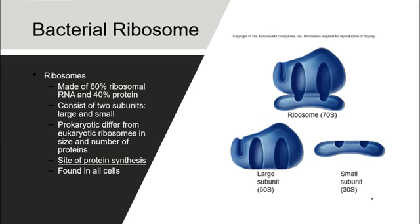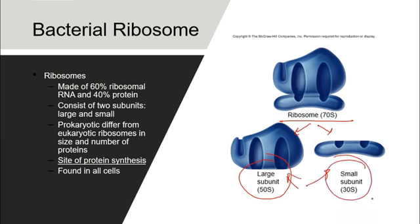Bacterial ribosomes are a little different in structure and function compared to eukaryotic ribosomes. While eukaryotic ribosomes are known as 80S ribosomes, prokaryotic ribosomes are known as 70S, composed of two components: the large 50S subunit and the smaller 30S subunit. These ribosomes are involved in protein synthesis, and bacteria continually perform protein synthesis inside the cytoplasm because they always have ribosomes there. Ribosomes are made up of 60% ribosomal RNA and 40% protein, and are found in every single prokaryotic cell because they are essential for producing proteins that help the bacteria survive.